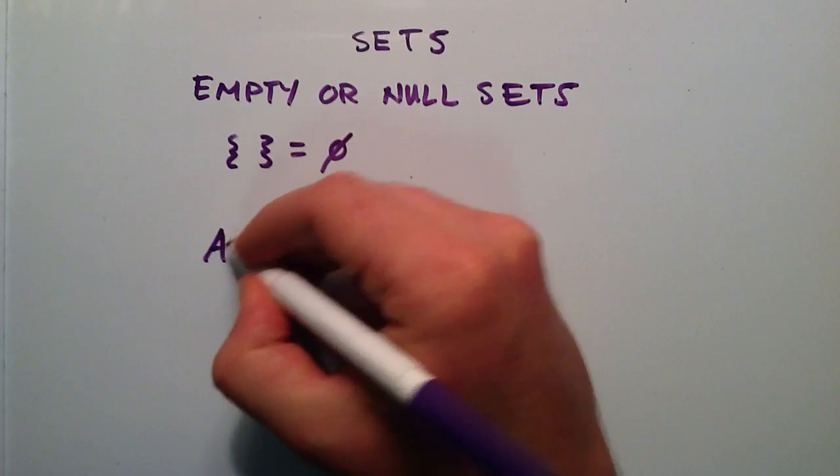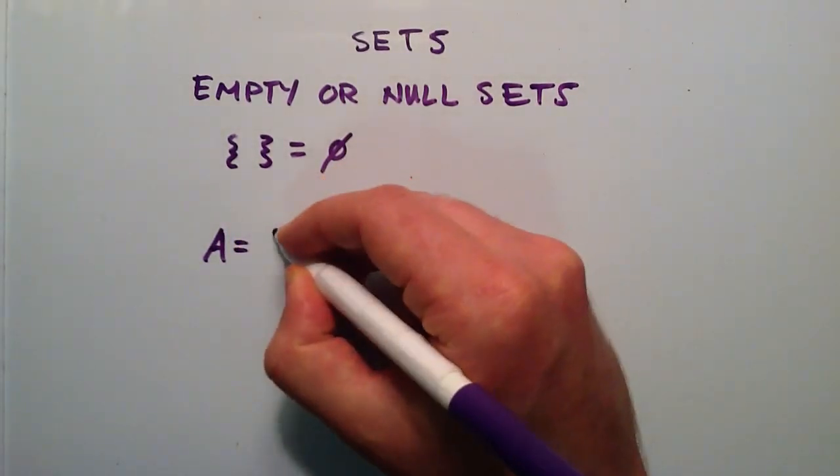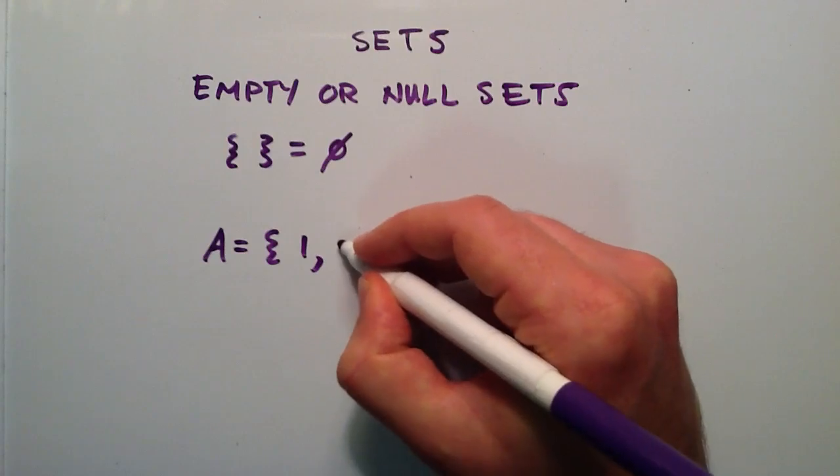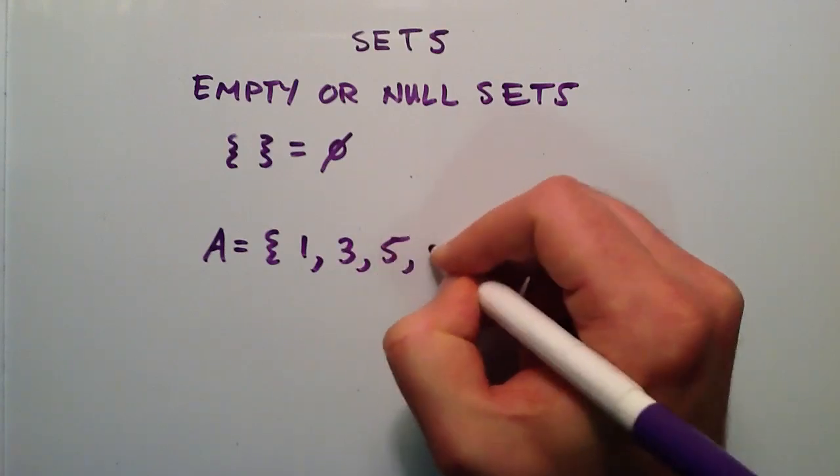So let's just do a really quick example so that the point sinks in here. Let's say that we have some set A, and A contains the elements 1, 3, 5, and 7.